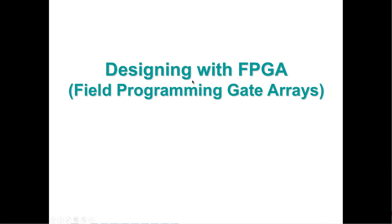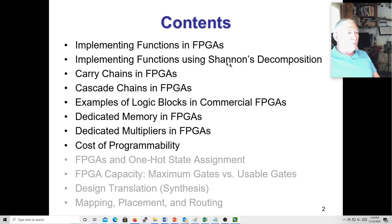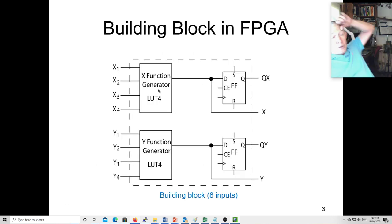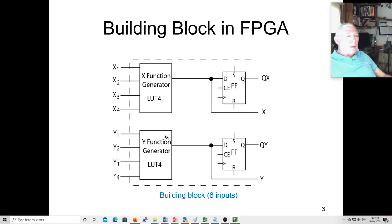Now programming with FPGAs. We're going to talk a little bit about cascade chains and carry chains, and a little bit about dedicated memory and cost of programmability. Our chip uses lookup tables — we have LUT6s. We have two LUT6s in every slice, a couple of relays and some multiplexers, and we also have carry chains and cascade chains.